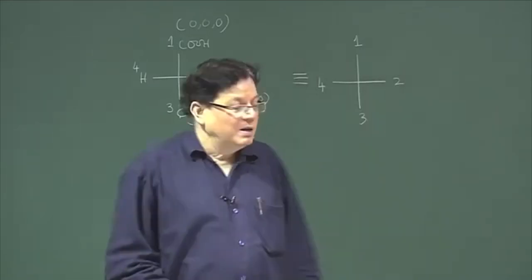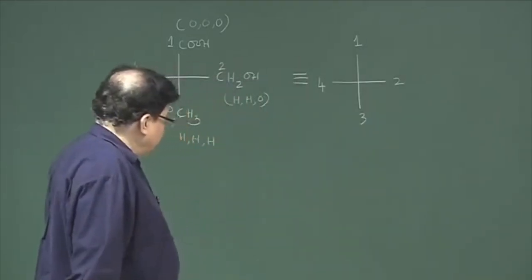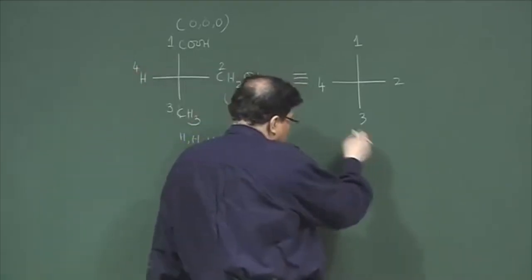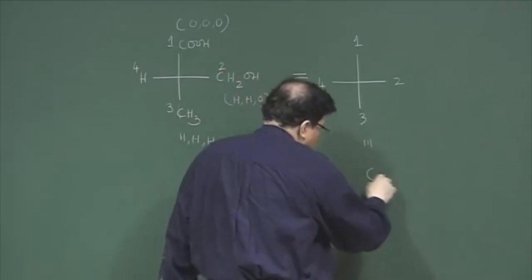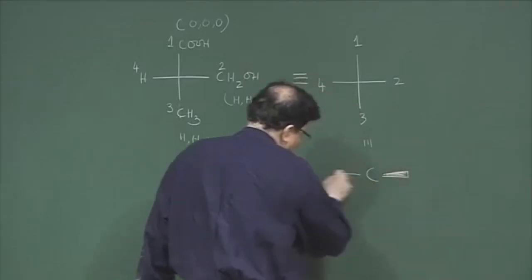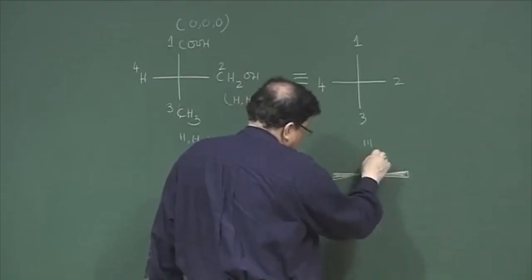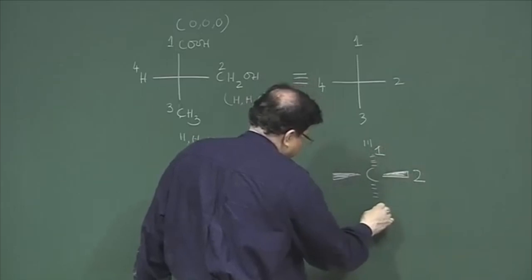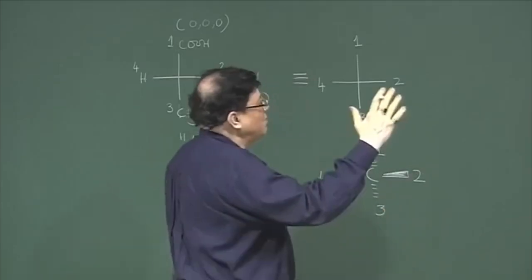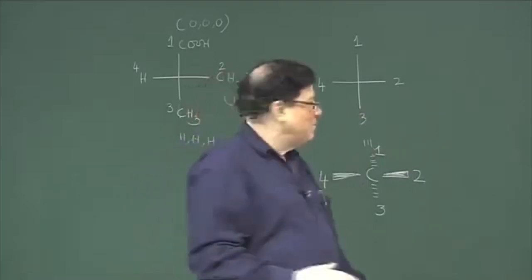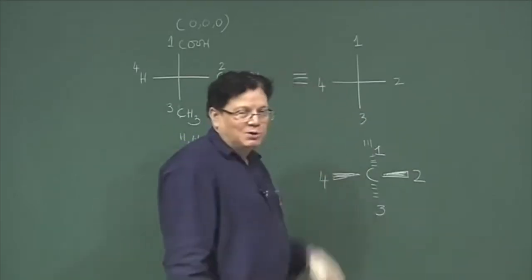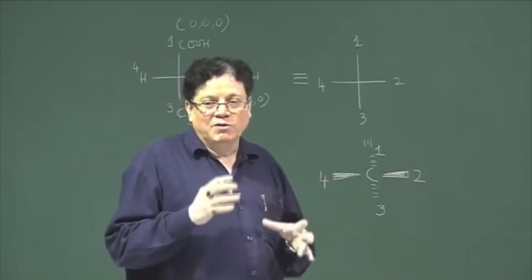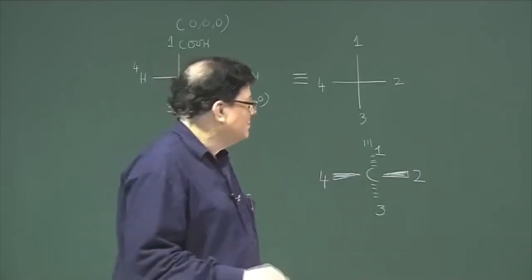Now try to find out what is the configuration. There is a slight problem here because in Fischer projection, if you convert it into the wedge formula, the two horizontal bonds are beta and the vertical bonds are alpha. That means number one and two are horizontal, three and four are vertical. So if I am looking from this side, I am actually looking from the side of the fourth group — but to assign RS configuration I have to look away from the side of group number four.